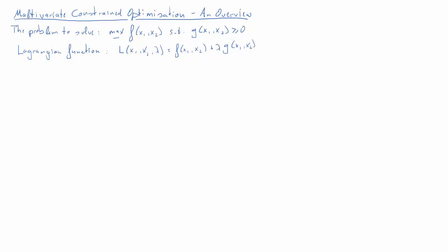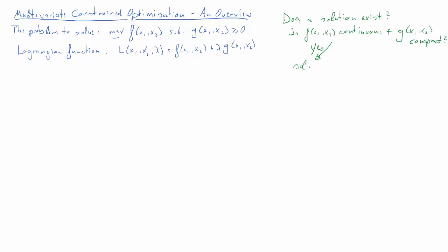You may wonder whether a solution to this problem actually exists. There is a particular case where we can answer that question definitively. We need to establish whether the function f is continuous and whether the constraint is compact. If both conditions are given, then we know a solution exists. If however either f is not continuous or g is not compact, then we don't know — a solution could still exist, but it may also not exist.